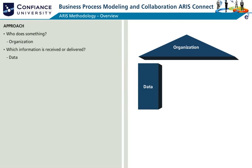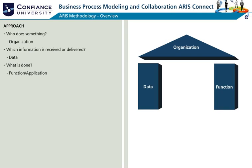The data view describes which information is received or delivered. It provides data of all the models including all business and technical models. The function view describes what is done. It represents a functional decomposition of business activities and includes application models.